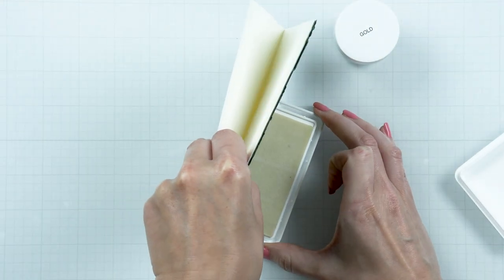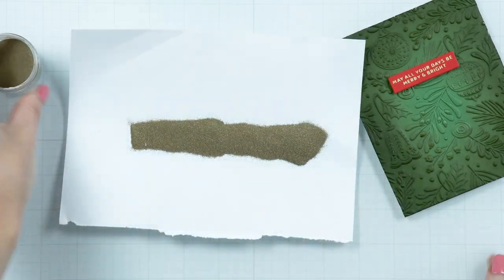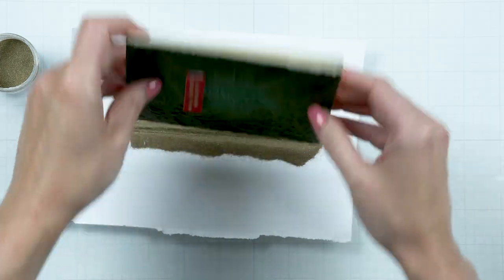Add gold embossing powder onto a sheet of paper and dip each panel edge into the embossing powder.